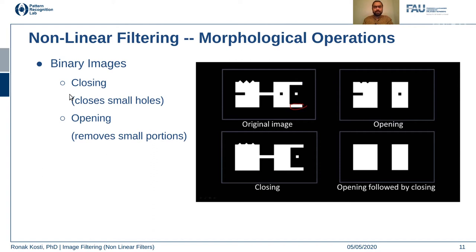Closing and opening are another type of morphological operation. In closing, you apply a structuring element that closes the small holes present inside the image — in the output you can see that these holes disappear. In opening, the operation removes small portions depending on the size and shape of the structuring element, getting rid of small arms or protrusions as seen in the output image. When the operation of opening is followed by closing, you are able to generate combined results, so morphological operations can be applied in different combinations depending on what you want to achieve.